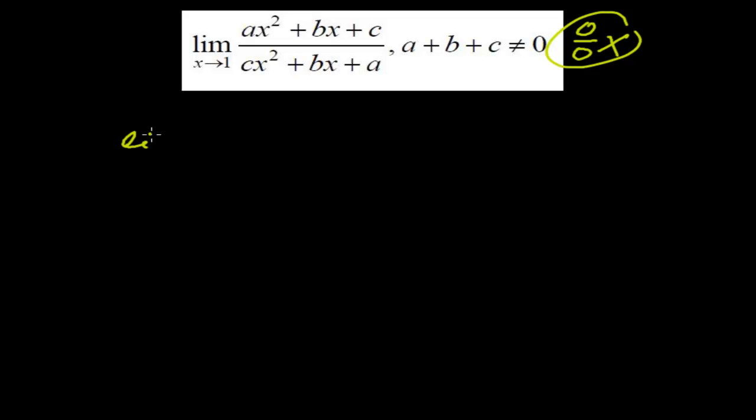So limit when x tends to 1: ax squared plus bx plus c divided by cx squared plus bx plus a. I have often seen many students getting confused or taking this as something difficult, but it's really simple. Just plug the value. You need to see that since a plus b plus c is not equals to zero, we can simply plug this.